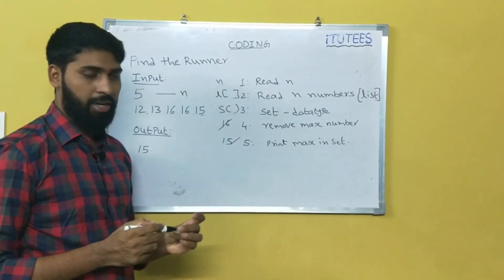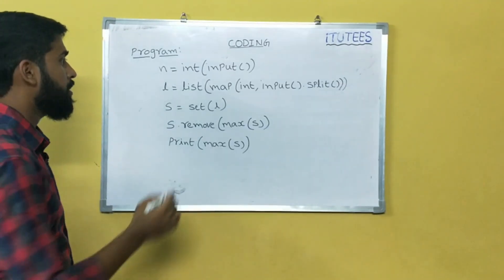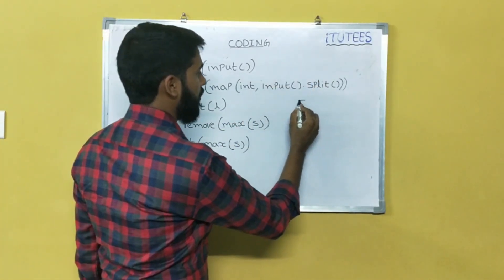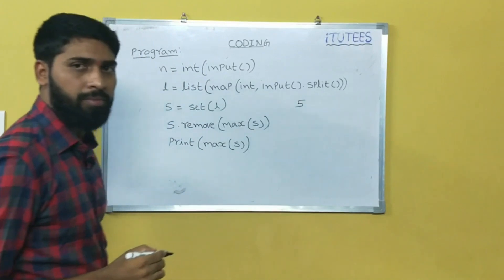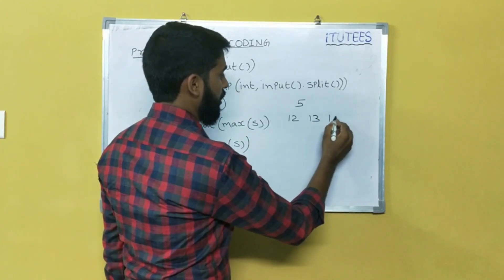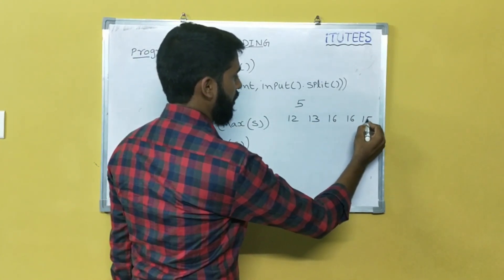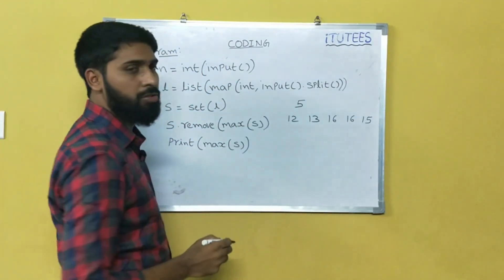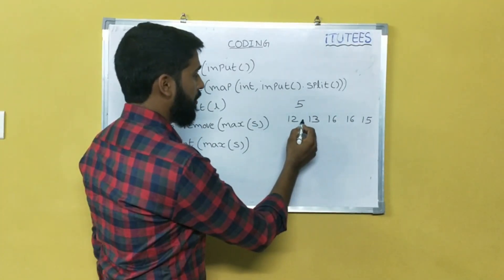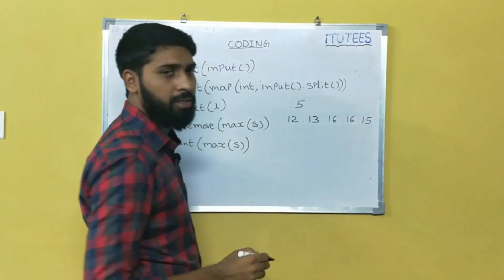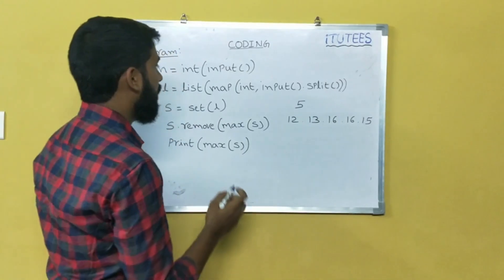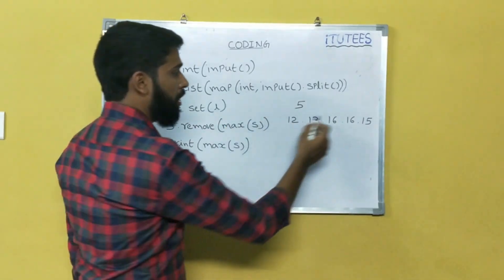So now I write the code. This is the first instruction to read the n value. In our example, I am giving 5. So after that, we give the instructions: 12, 13, 16, 16, 15. Here the input function is used to read the input from the keyboard. dot split — that means whenever we get an empty space or blank space, we treat it as individual numbers, and we can split this line and apply integers to all the numbers.